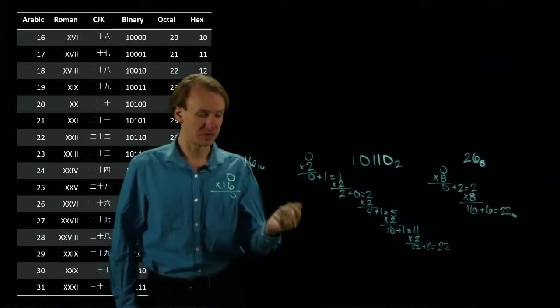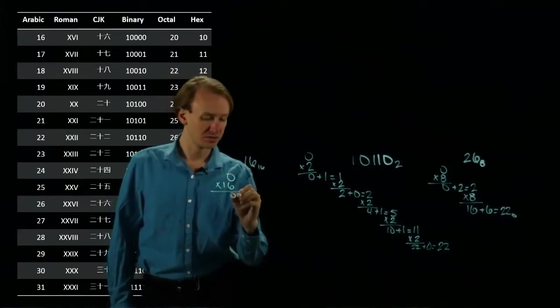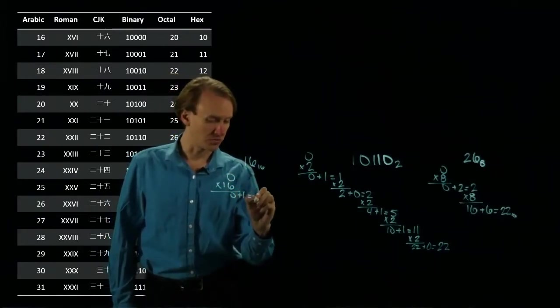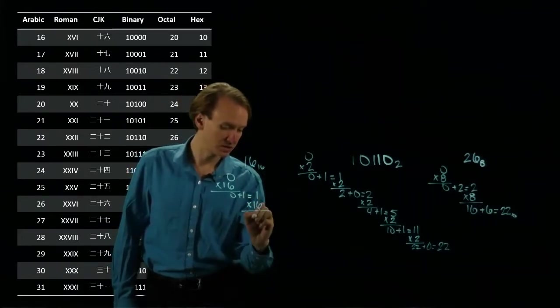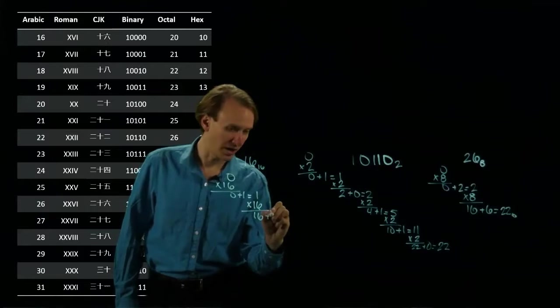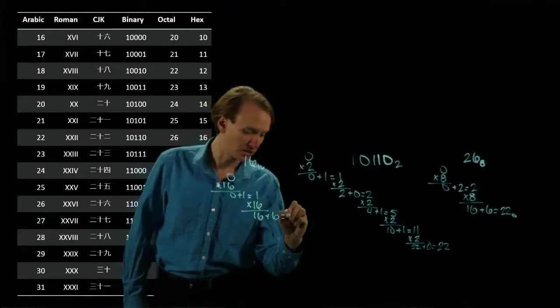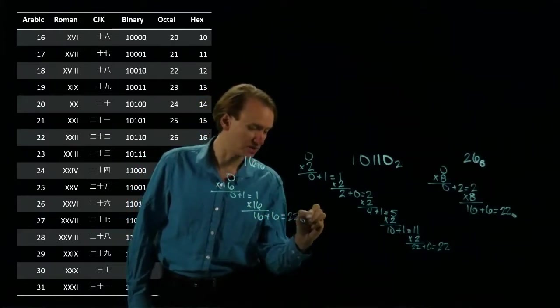So of course gives me 0. Now I'll add the first digit, which will give me 1. And now I can multiply by 16, which gives me 16. I'll add 6 to that. And I'll get 22 in base 10 again.